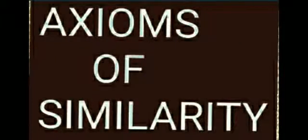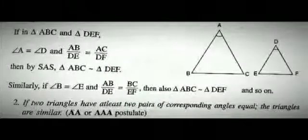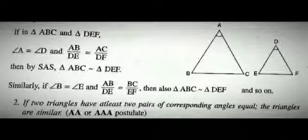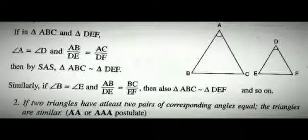Axioms of similarity. The first axiom is the SAS axiom, where sides are in proportion. As you can see in the figure, AB by DE is equal to AC by DF, and angle A is equal to angle D. So by the SAS axiom, both triangles are similar.